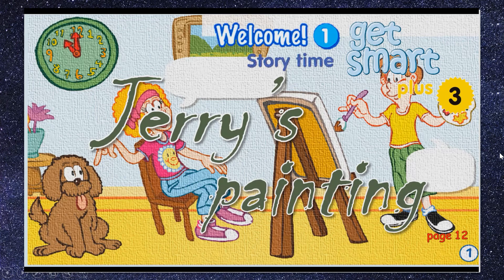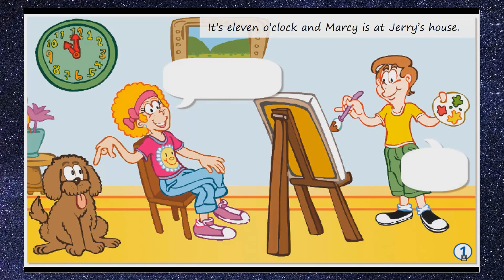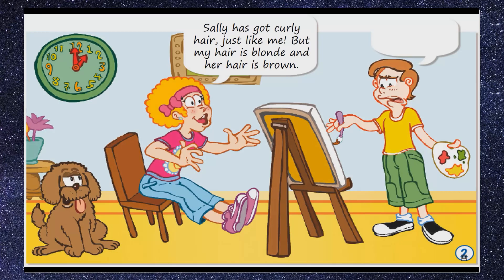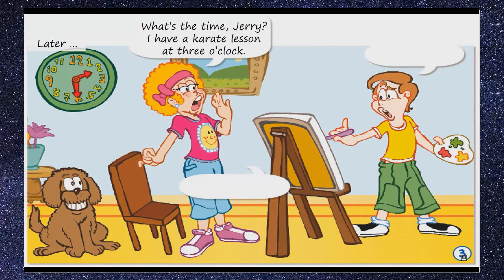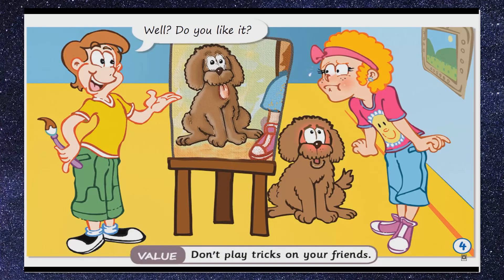Get Smart Plus 3, Module 1 Storytime: Jerry's Painting. It's 11 o'clock and Marcy is at Jerry's house. What's your dog's name, Jerry? Her name is Sally. Sally has got curly hair just like me, but my hair is blonde and her hair is brown. Don't stand up, Marcy. Later — What's the time, Jerry? I have a karate lesson at three o'clock. It's half past two. Can I see it now? Well, do you like it?